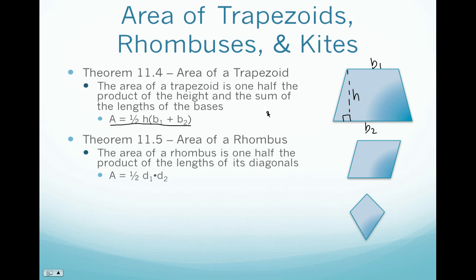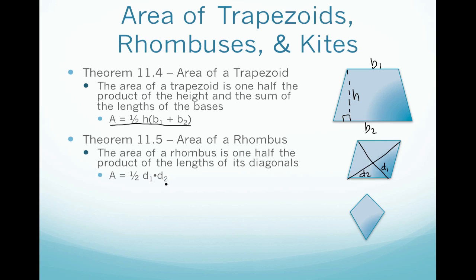Now moving on to a rhombus. A rhombus is a special type of parallelogram with all four sides congruent. We can find the area of a rhombus if we know its diagonals. If we call the diagonals d1 and d2, the area of the rhombus is one-half times d1 times d2 — that is, one-half of the product of the lengths of the diagonals.